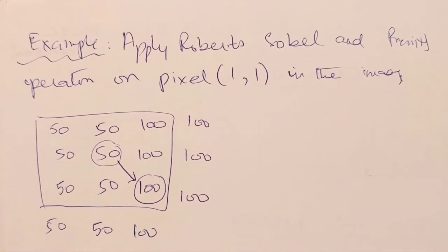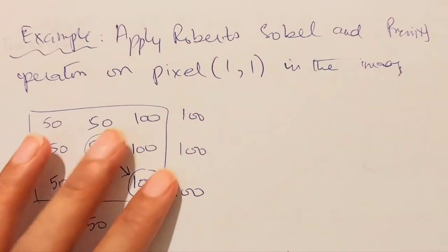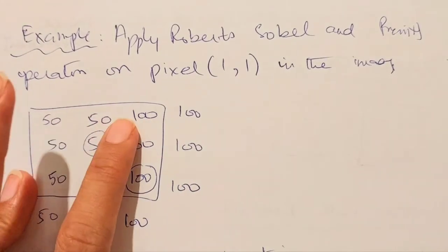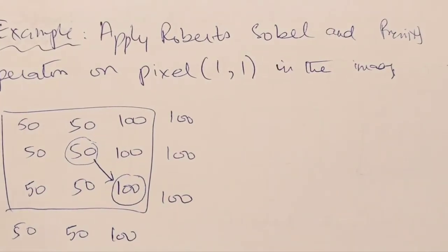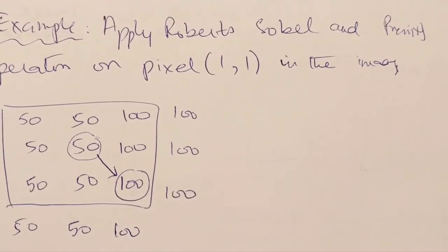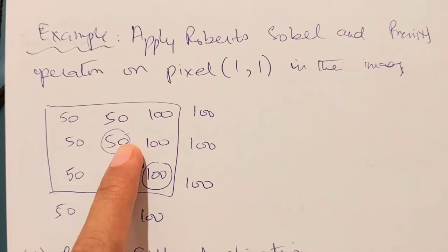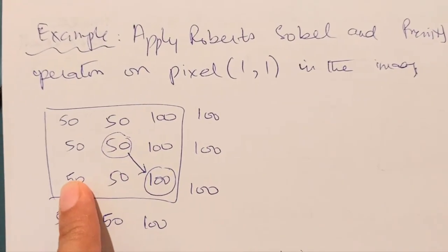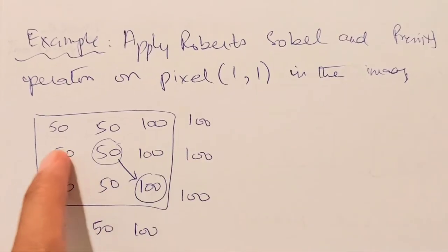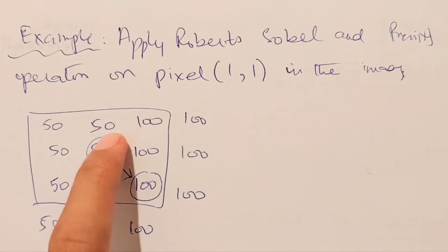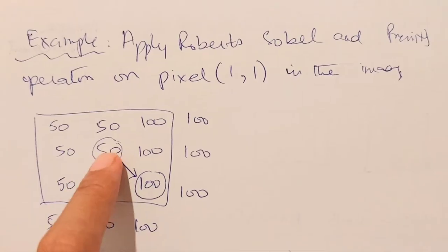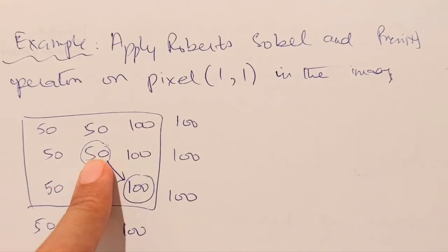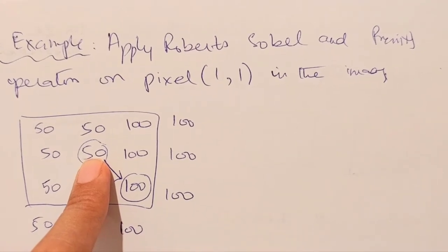Before applying any filters, make this very clear: whenever we do image enhancement using neighborhood techniques, we multiply all neighbors of the image with the corresponding filter values, but the impact only comes on the center pixel. You must never change the values of all pixels in the image — only deal with the central pixel value, which is the only pixel being enhanced.